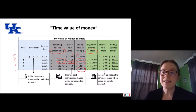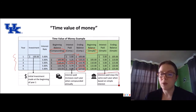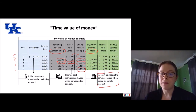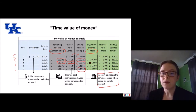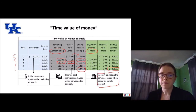Now if we look at simple interest, that is where the interest paid stays the same each year — it's not compounded like in the previous example. So 5% of the initial investment is always $5.00. Each year we're adding $5.00 to the total, so at the end of five years we would have $125.00.